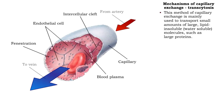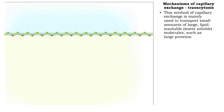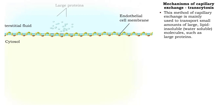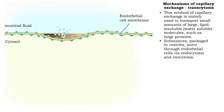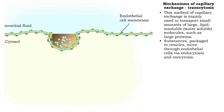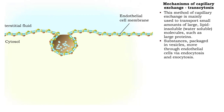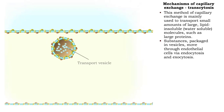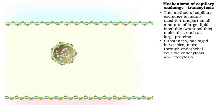Transcytosis is used to move small amounts of large lipid-insoluble molecules, such as large proteins, across capillary membranes. In this process, substances contained in vesicles enter endothelial cells by endocytosis and exit by exocytosis.